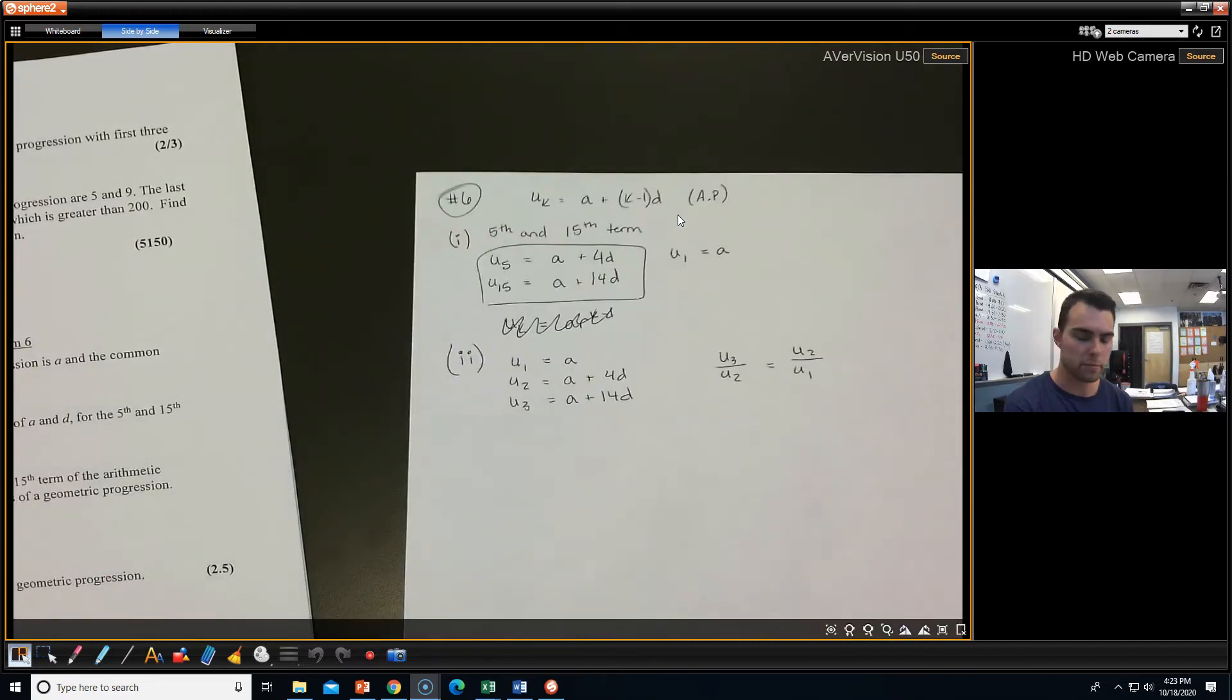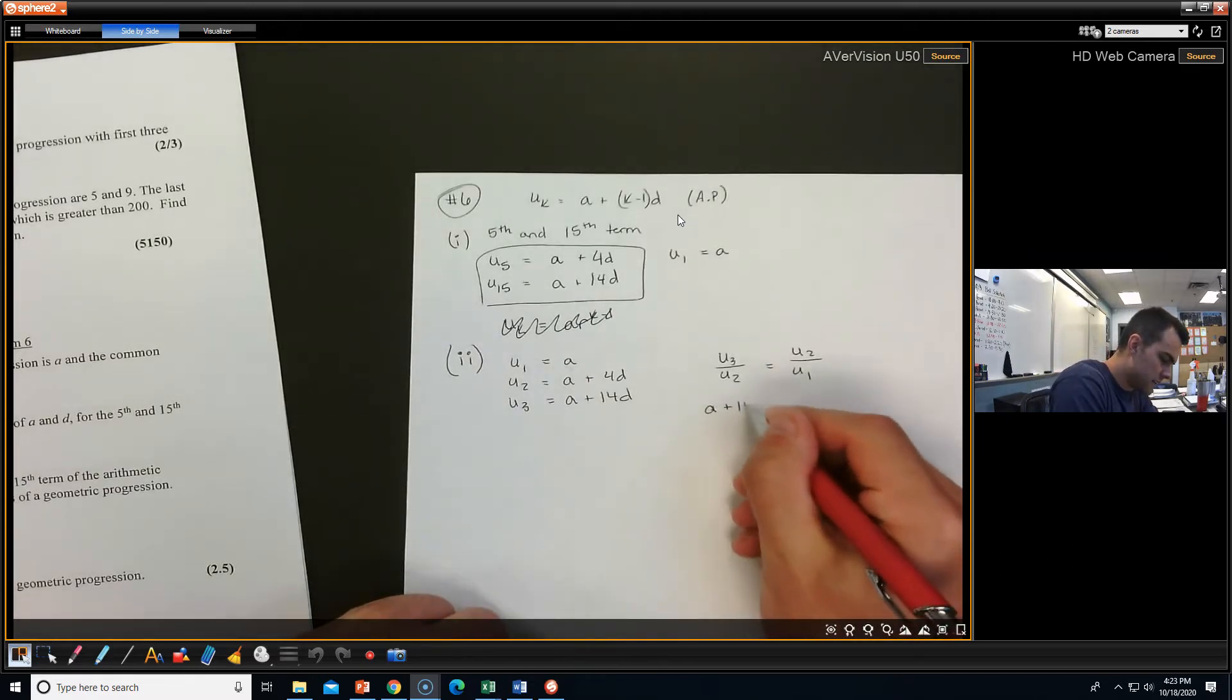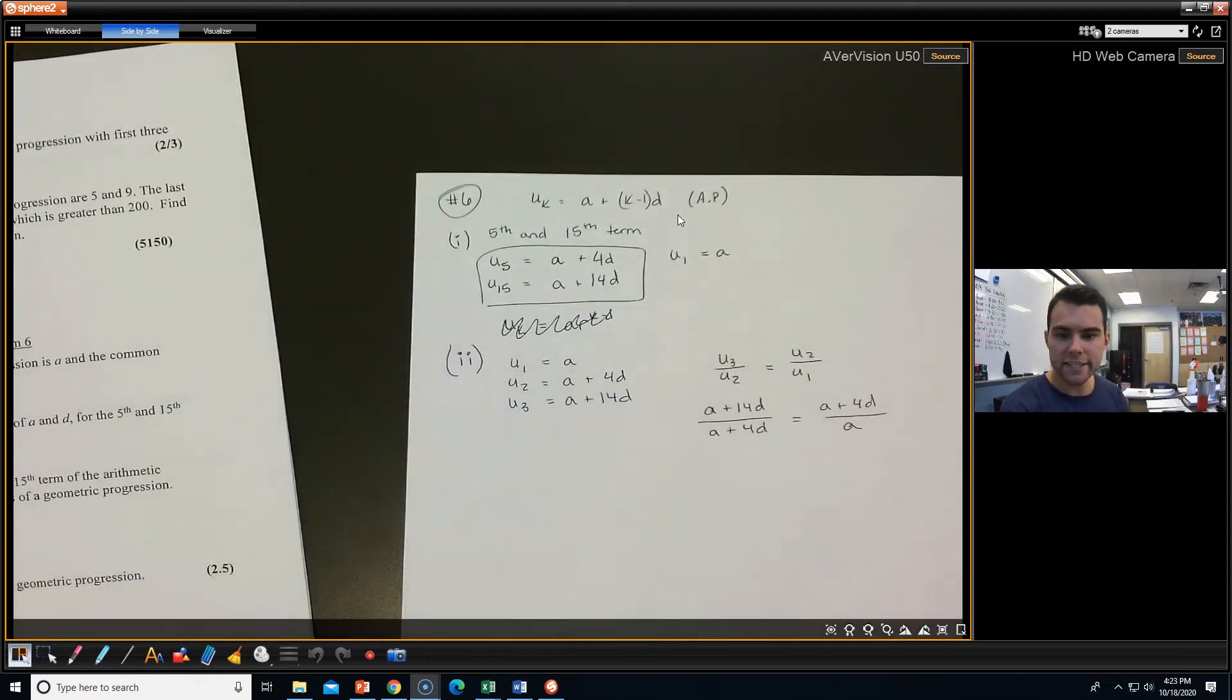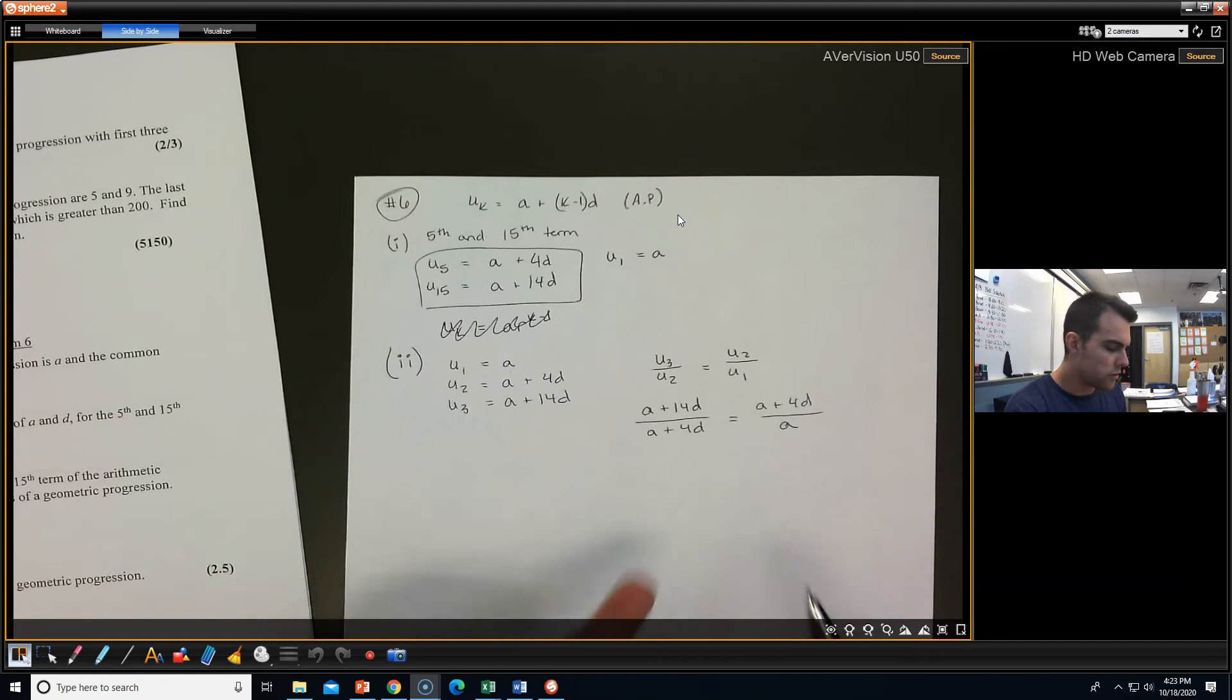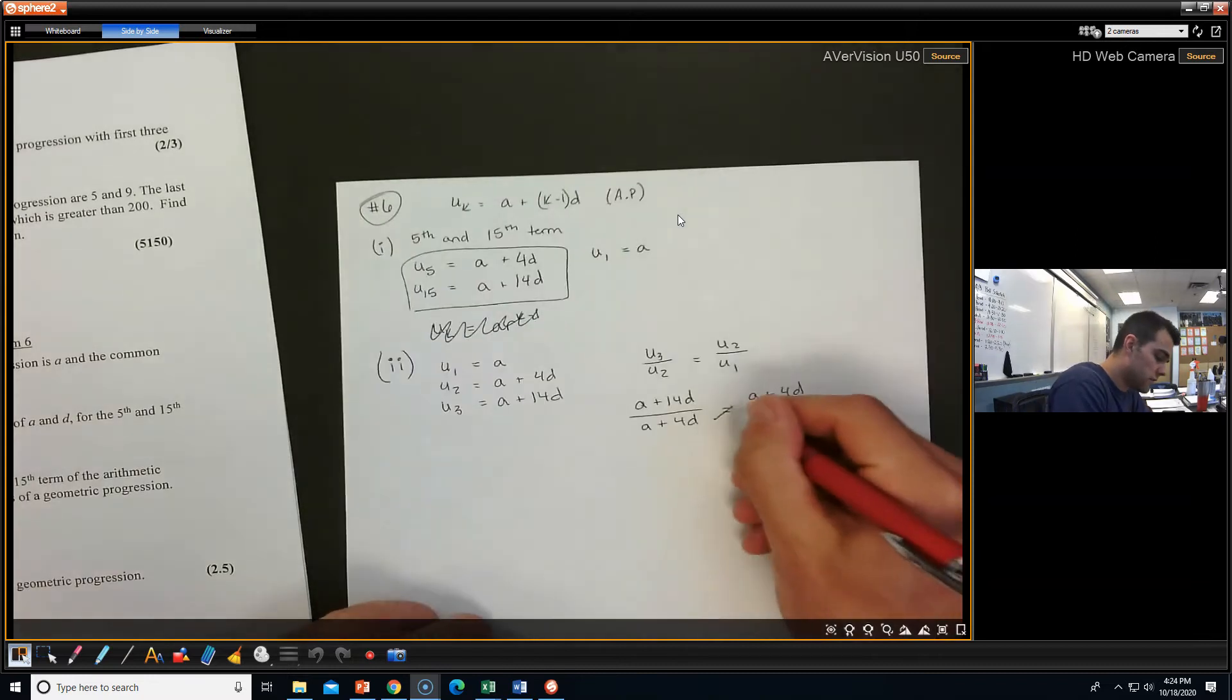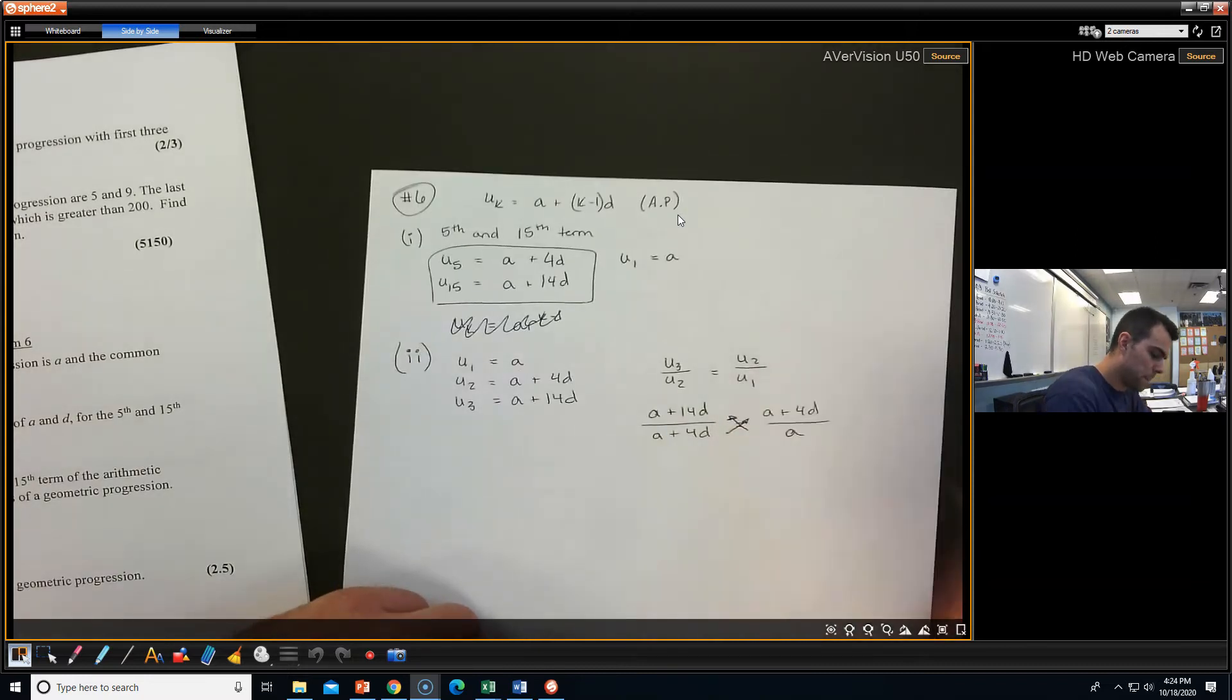You're taking that first term divided by the previous. So if I plug some stuff in, and let's do that, this is what's going to happen. I get this guy. This is a proportion. So I don't want to work with fractions. I'm going to fix this up, and I'm actually going to cross multiply.